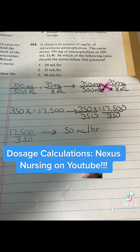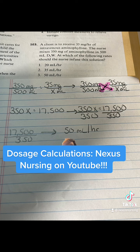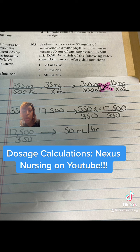I'm going to move my face so you can see the steps of the problem. Everybody does math in their own way — this is just how my brain is wired. So here's how I set it up: 350 milligrams in 500 milliliters — they already gave that to us — equals 35 milligrams over X.